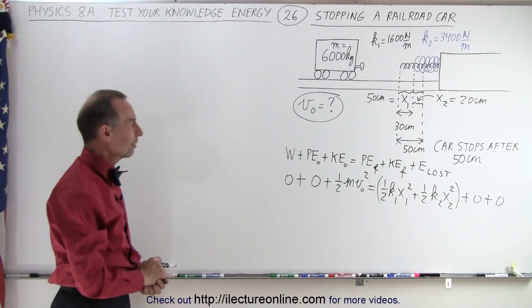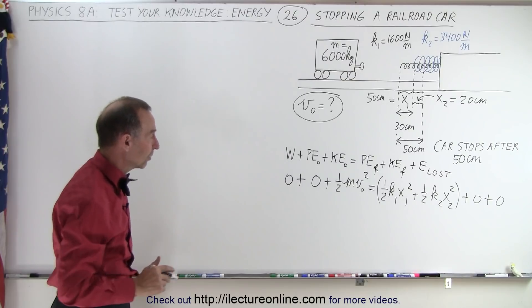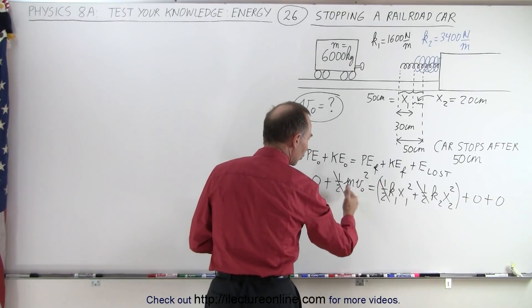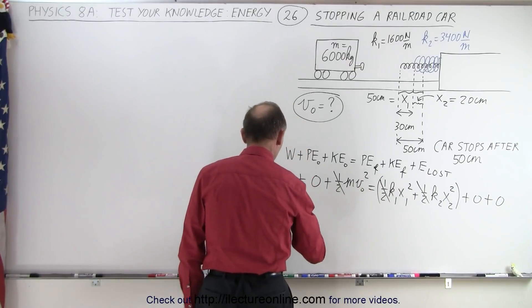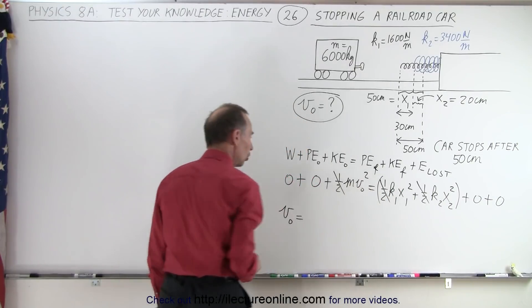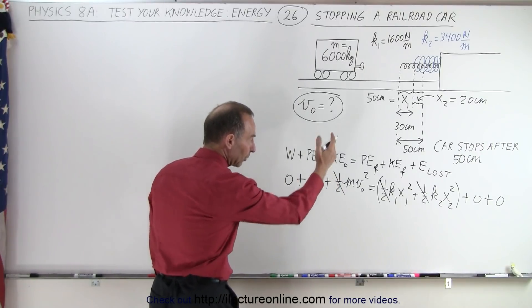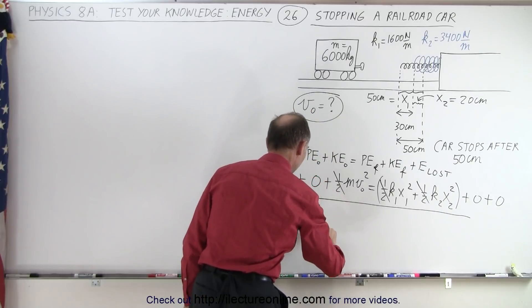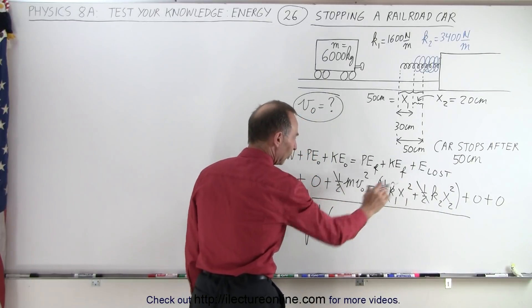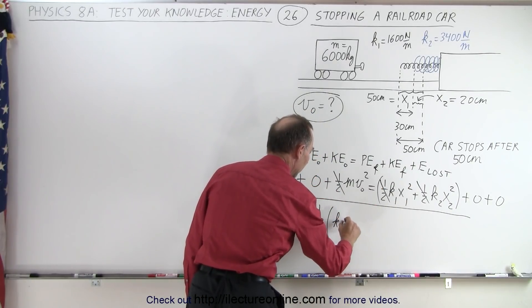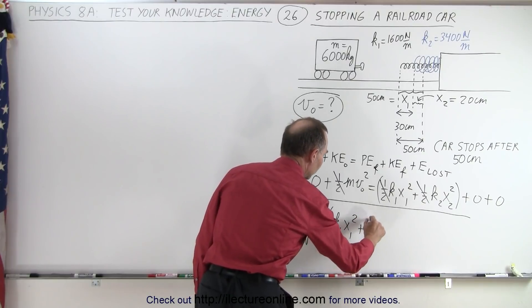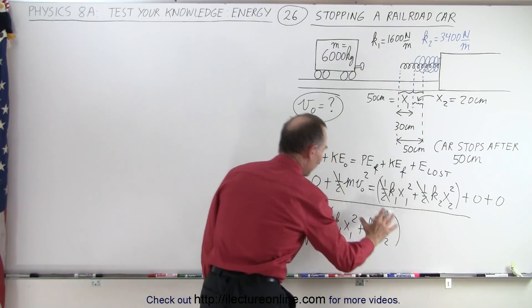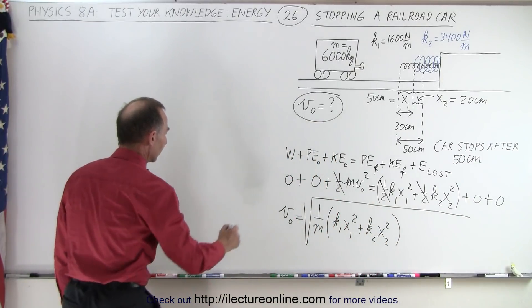And so what we're trying to find is the original velocity. Calculating v initial: since it's squared, we're going to take the square root of both sides. So we have v initial equals the square root of 1 over m times what's left, so we have k1 x1 squared plus k2 x2 squared, and that will give us the original velocity of the railroad car.